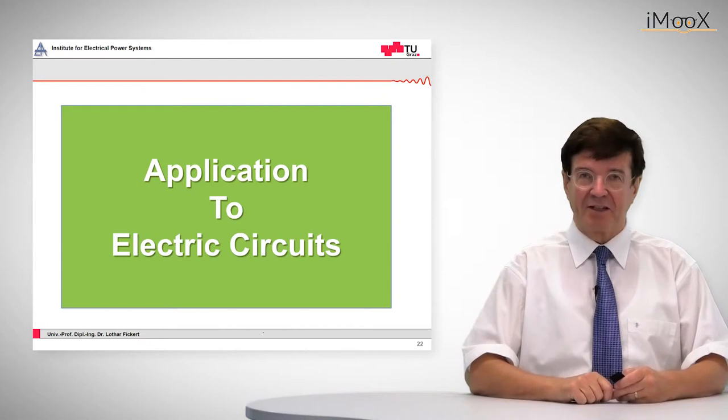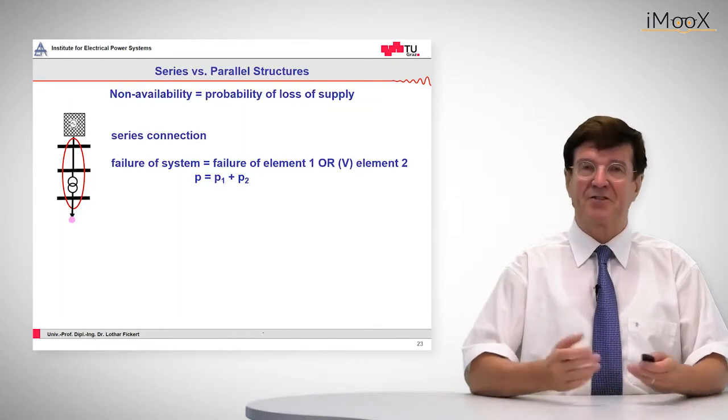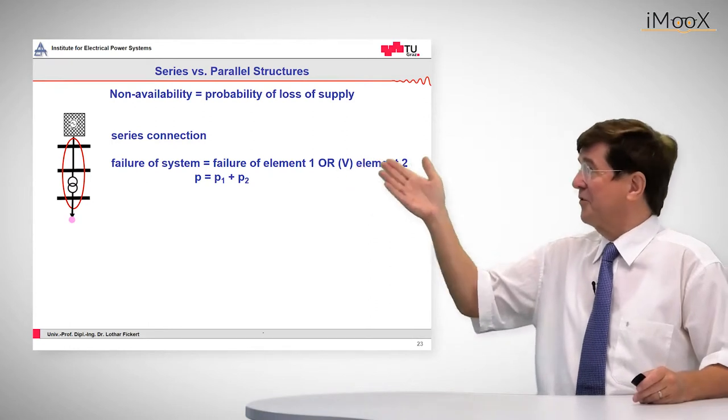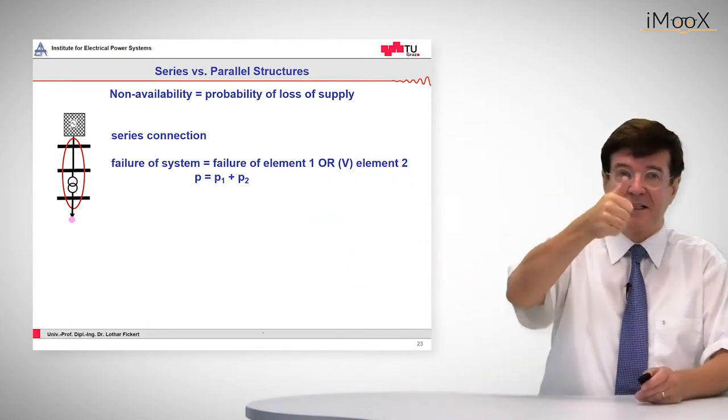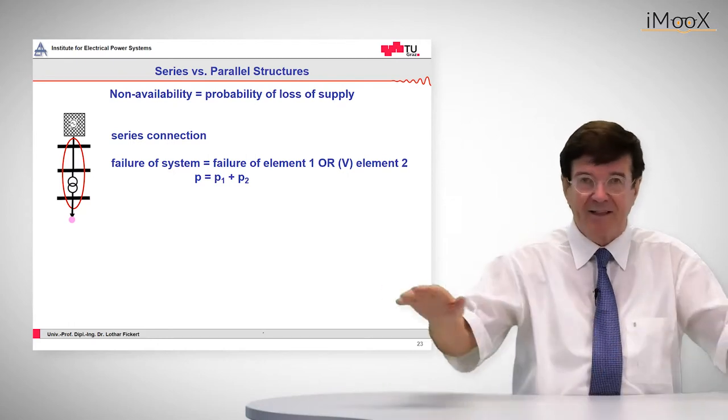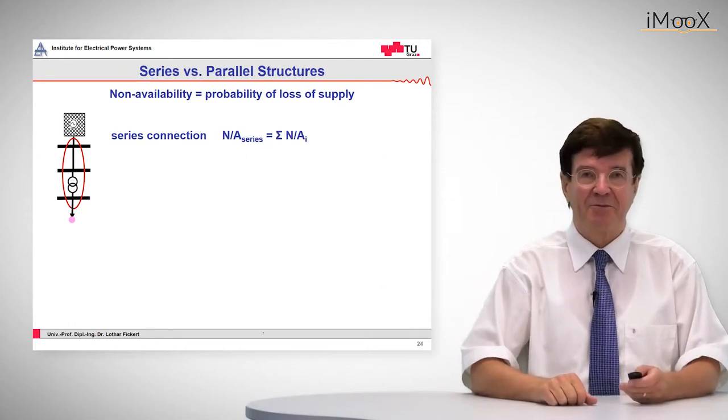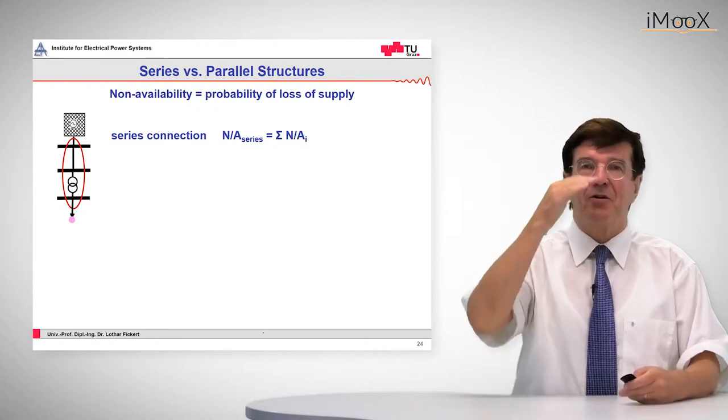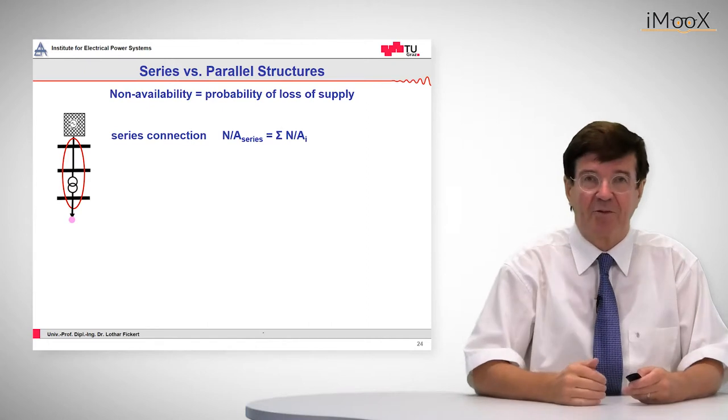The application to electric circuits means that we have series connections and parallel connections. For series connections, the failure of a system occurs if one element fails, either the line or the transformer. The series connection is given as the sum of the single failure probabilities.